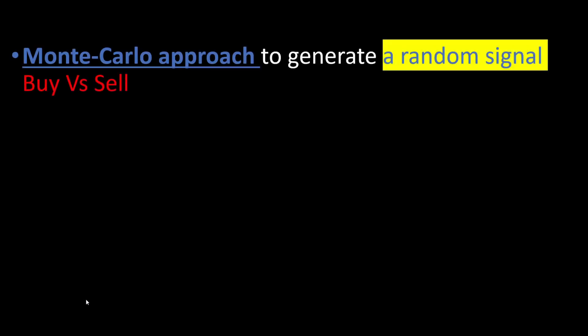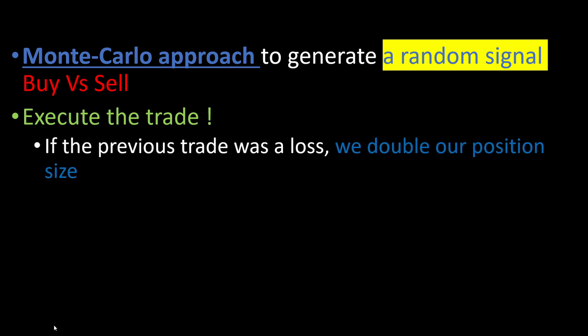To test this method we'll use a Monte Carlo approach — a term used in mathematics to describe any approach using random numbers. We'll generate a purely random signal, not based on any technical indicators or custom predictions, to decide whether to sell or buy. The size of the trade will depend on the previous trade: if it was a loss, we double the position size using the Martingale approach.